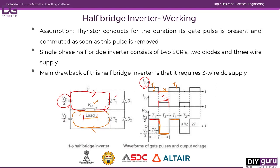When the load is varying — for example if we are using an RLC load — we have two cases: one is over damped load and the other is under damped load.